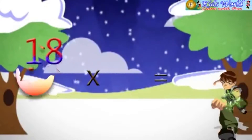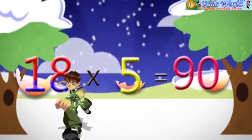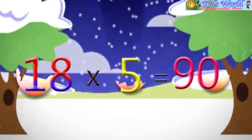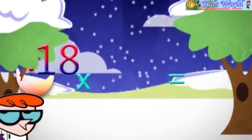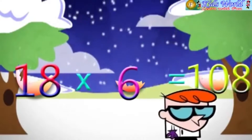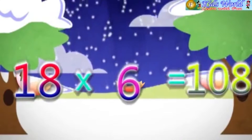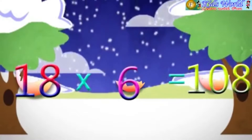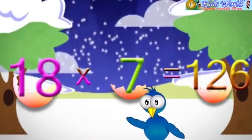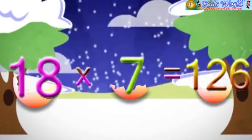Table 18. 18 into 5 is equal to 90. 18 into 6 is equal to 108. 18 into 7 is equal to 126.